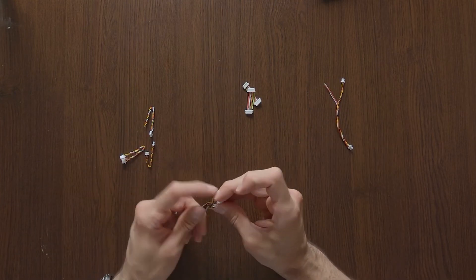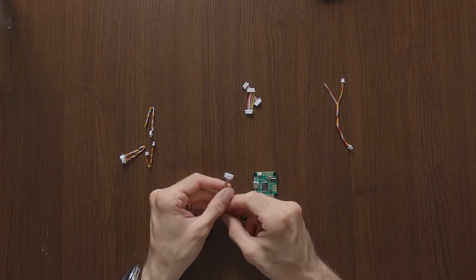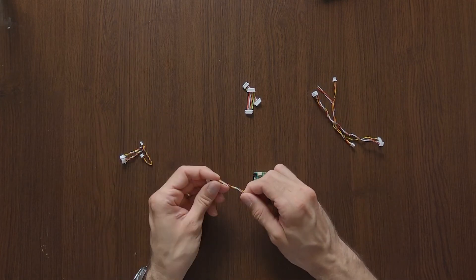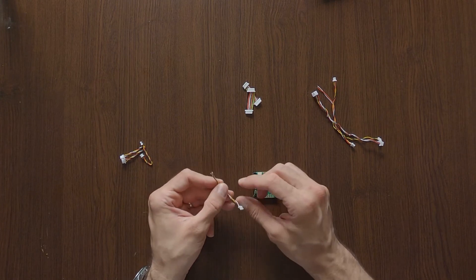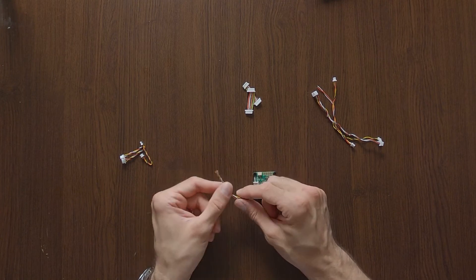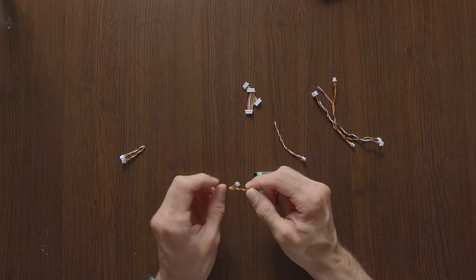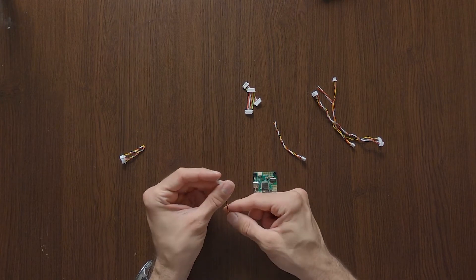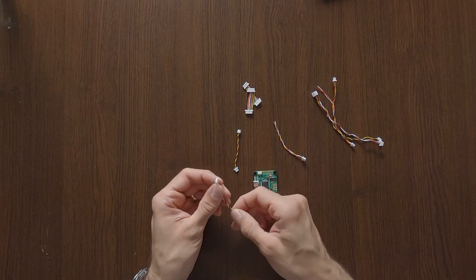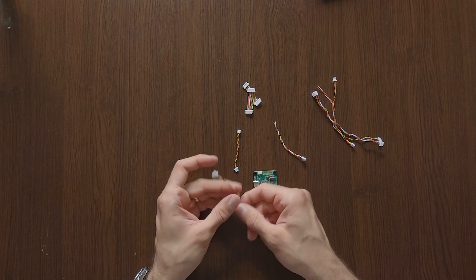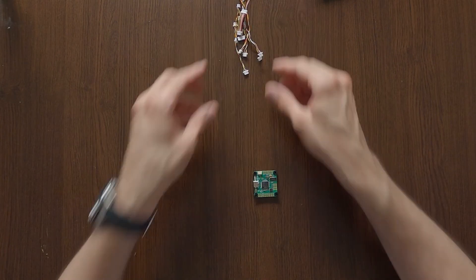Also we have the DJI cable for your air unit. You have one that you can solder on. This is for your Vista. If you're using Vista you can use this cable. This is really nice and convenient. Your analog cam cable and this one is also I don't know for what but we will check out this part.